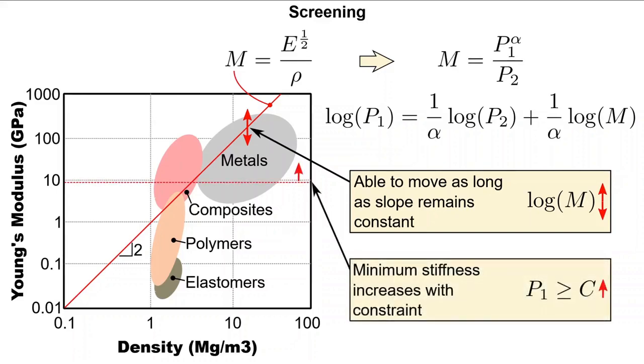We can slide the performance index line up and down and can draw it anywhere as long as it retains the same slope. We can then apply a second line corresponding to one of our constraints, such as that which corresponds to a minimum elastic modulus. This line can move up and down as well, according to the constraint prescribed, but moves up as our minimum stiffness increases.